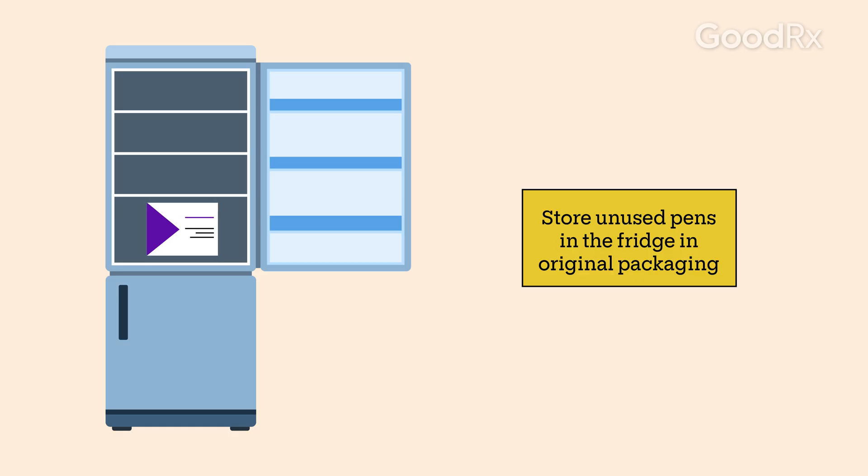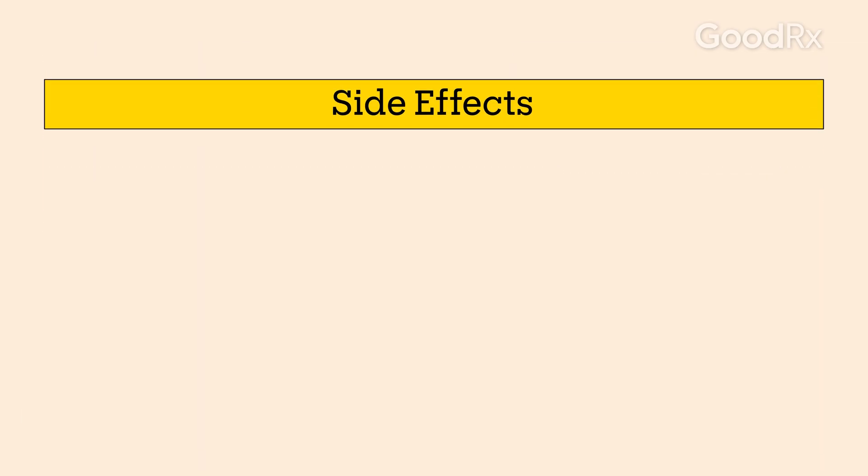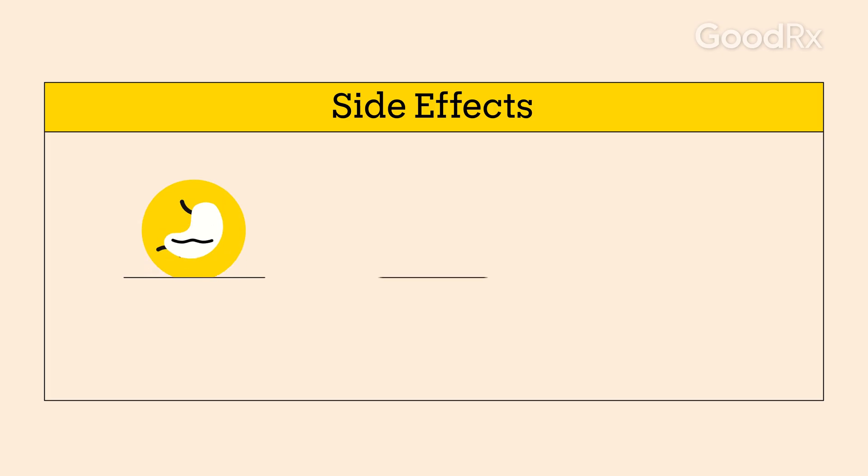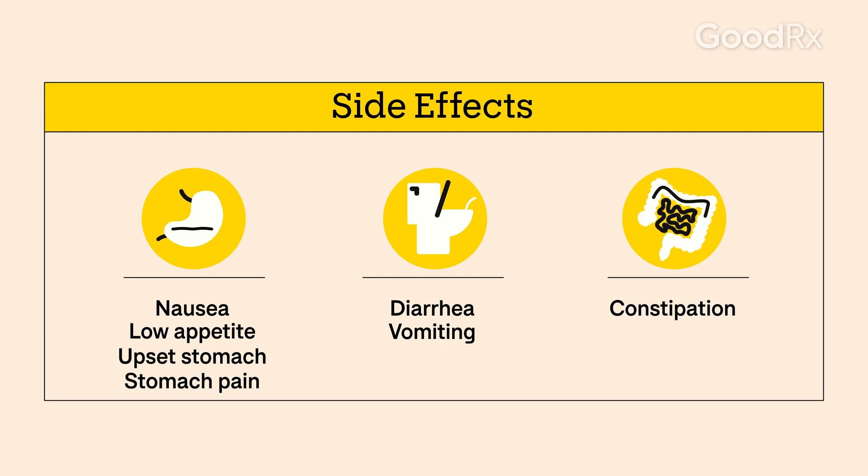Both your prescriber and your pharmacist can go over side effects that you may or may not experience. These may include nausea, diarrhea, low appetite, vomiting, upset stomach, constipation, and stomach pain.